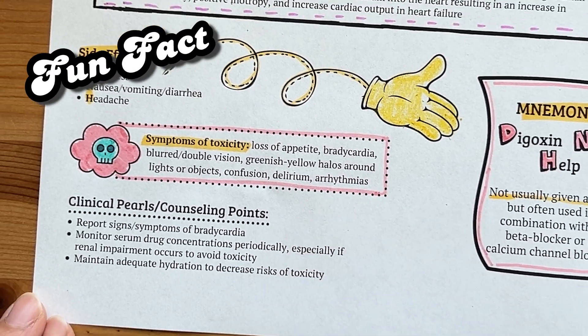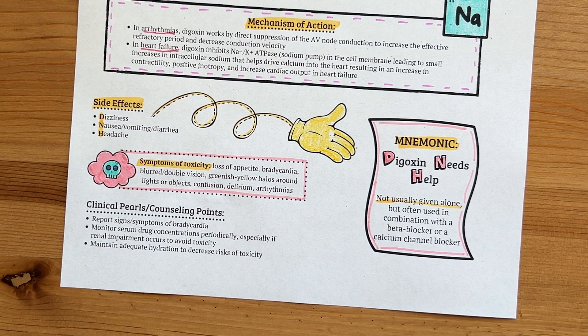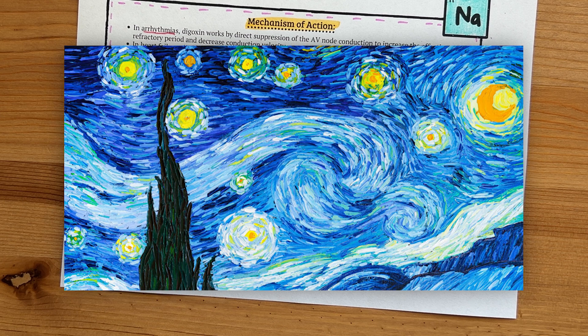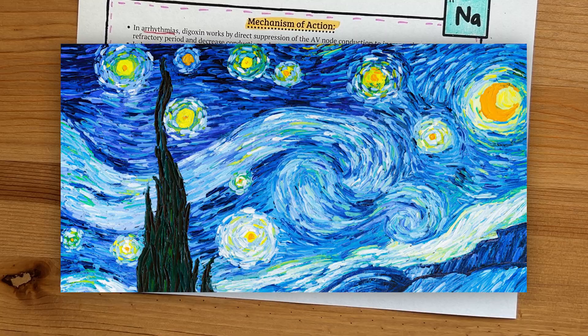Time for another fun fact: it's been speculated that the famous painter Vincent van Gogh suffered from digoxin side effects that led to the yellow tinges in his famous painting, The Starry Night.